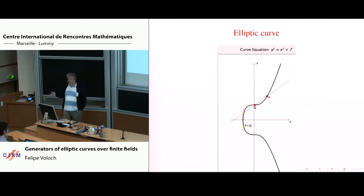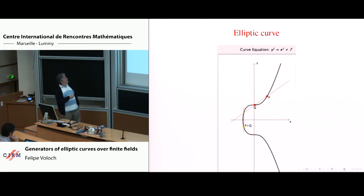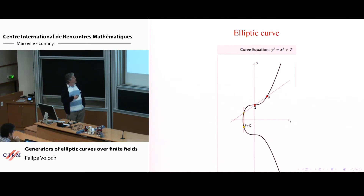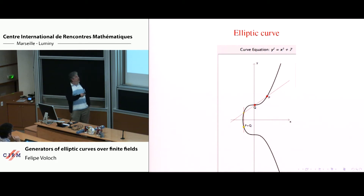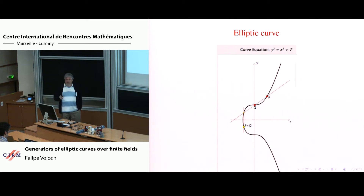So, elliptic curves — I guess we've all seen them. You have a curve given by a cubic equation. You get a curve in the plane, and you can add points by taking a line through two points, seeing where the line meets the curve, and then reflecting to get the sum of the two points. The beautiful thing about this construction is that it's algebraic. So if your points are in the same field as the coefficients, their sum is also in that field, meaning the subset of rational points is a subgroup.